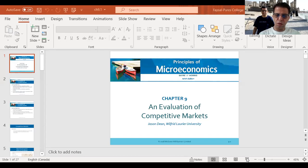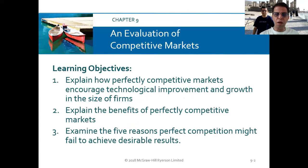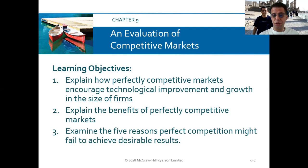In this chapter, chapter nine, we'll talk about evaluation of competitive market. Earlier we spoke about the competitive market, and now we will be evaluating it. During this chapter, we will explain how a perfectly competitive market encourages technological improvement and the growth of the size of a firm. We will also explain the benefits of perfect competitive markets and examine the five reasons perfect competition might fail to achieve desirable results.